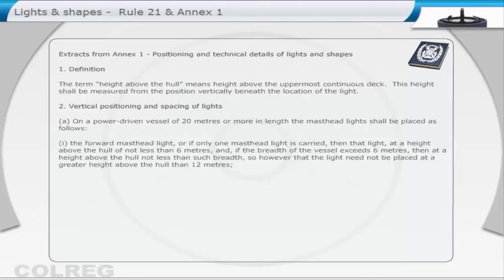And, if the breadth of the vessel exceeds 6 metres, then at a height above the hull not less than such breadth. However, the light need not be placed at a greater height above the hull than 12 metres.